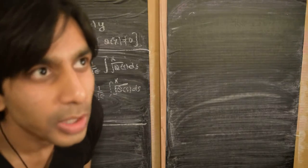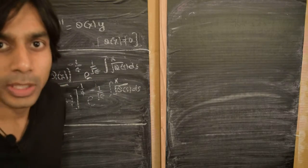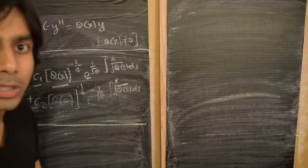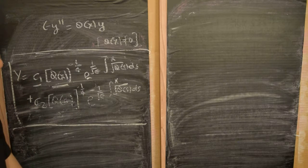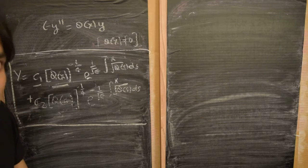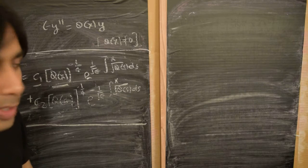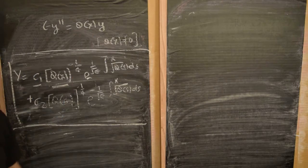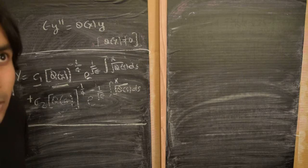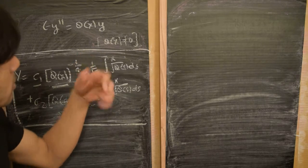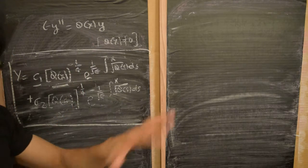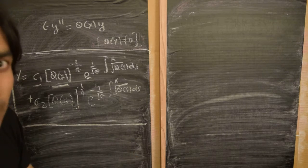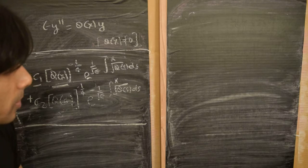Hi again. In the previous part of this video, we were looking at this equation — a Schrödinger-kind of equation: ε y'' = q(x) · y, where q(x) is some function of x which is non-zero in the interval we are considering, y is the dependent variable, everything is non-dimensionalized, prime is a derivative with respect to x, and ε is a small parameter in the problem.